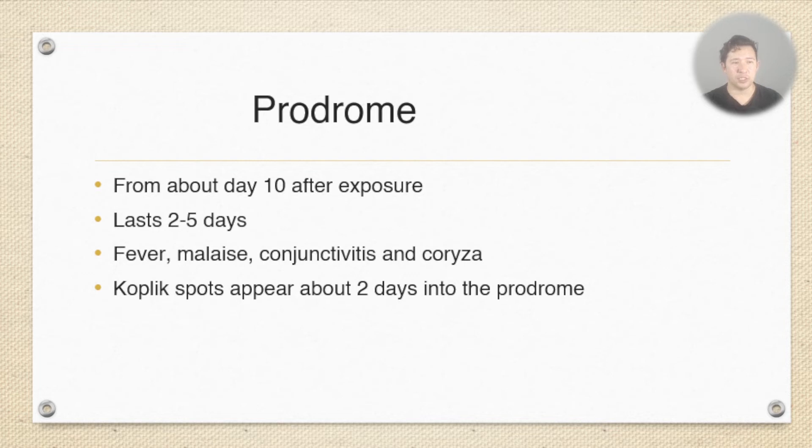The prodrome is like a viral illness. It usually lasts two to five days and it's a typical flu-like illness. You've got fever, malaise, coryza, and then you usually also get conjunctivitis. A couple of days into this prodrome you get Koplik spots in the mouth and I'll show a picture of those in a minute.